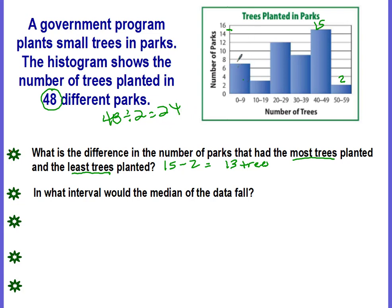So we have 9 parks here. I'm sorry, we don't have 9 parks. We have 7 parks. Here we have 3 parks, so that's 10. We have 12 right here, so that's 22 parks, which means the 24th park would lie in this interval right here.